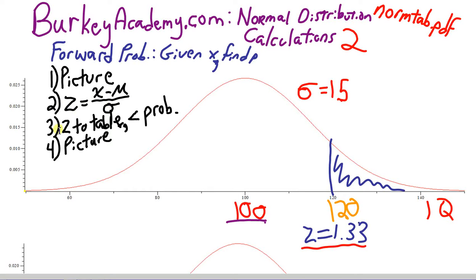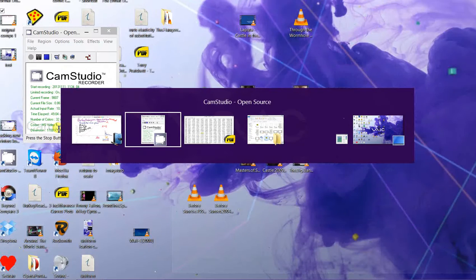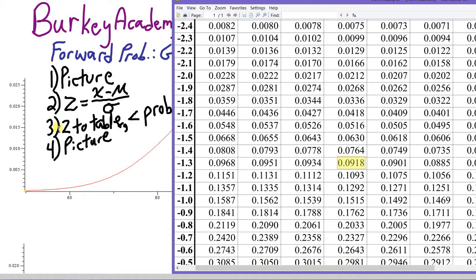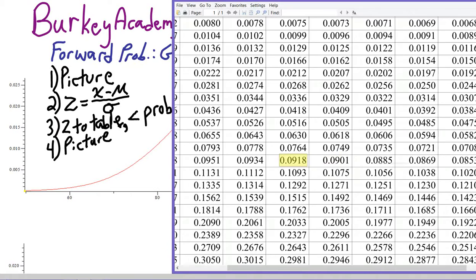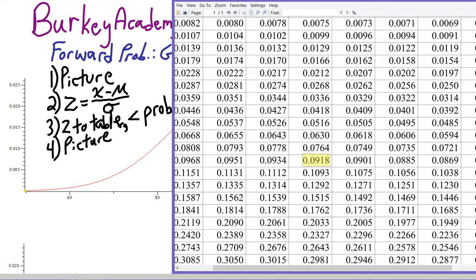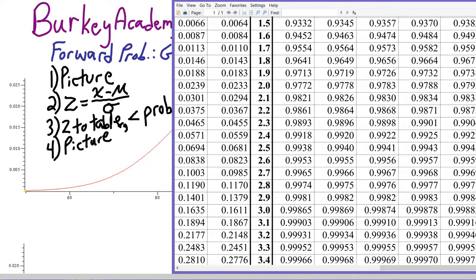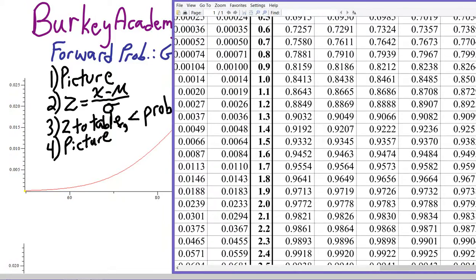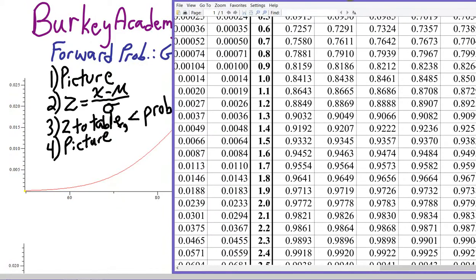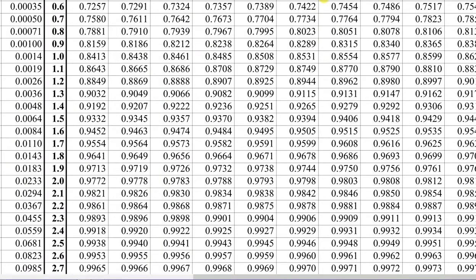We took that z-score to the table and looking at the table, we found that a z-score of 1.33, and if you need a z-score table, please go to my website, www.berkeyacademy.com, and this z-score table we're looking at here is called normtab, n-o-r-m-t-a-b.pdf.